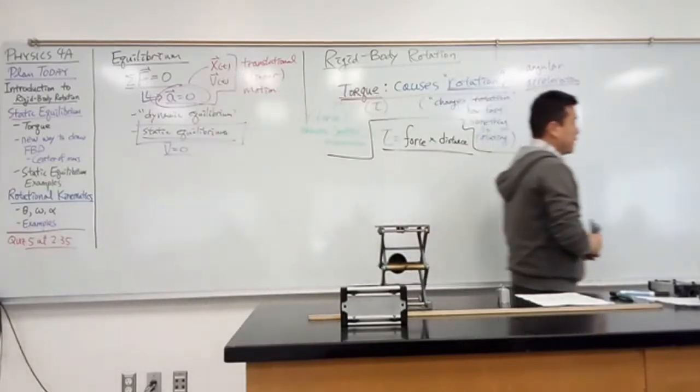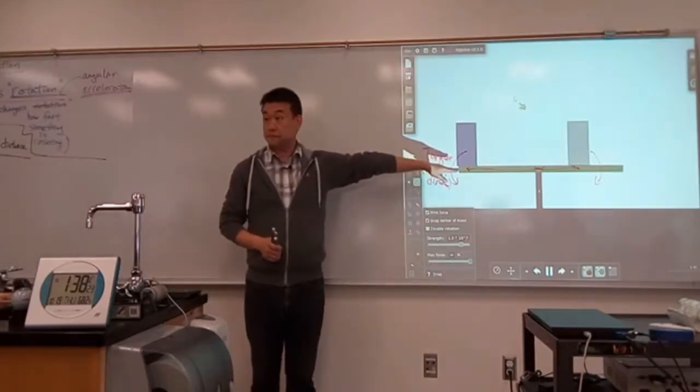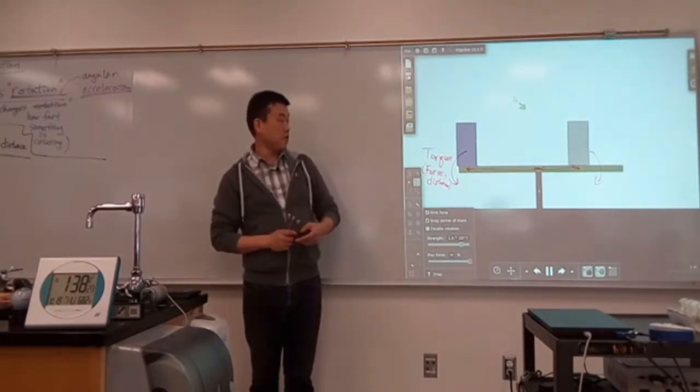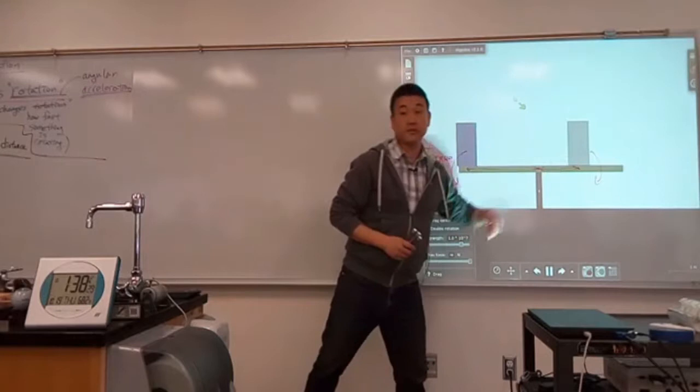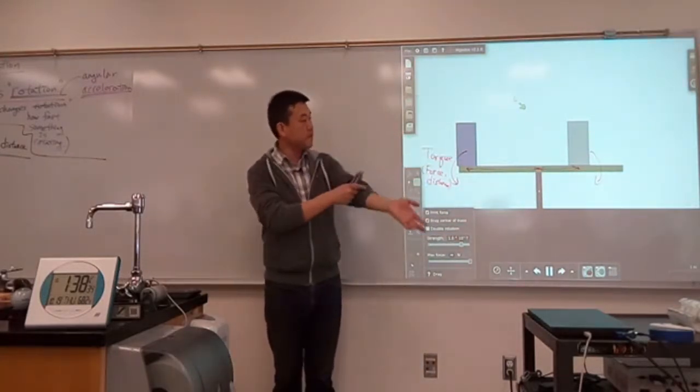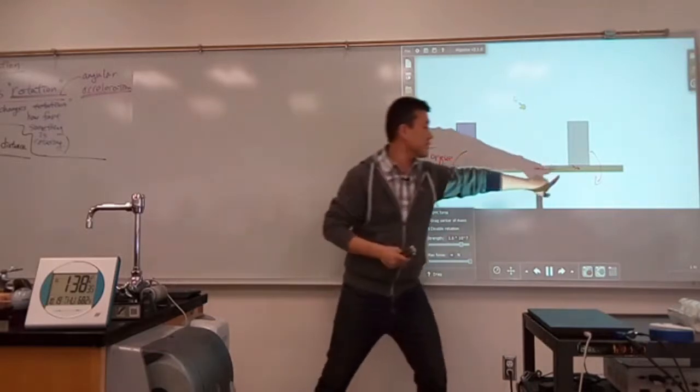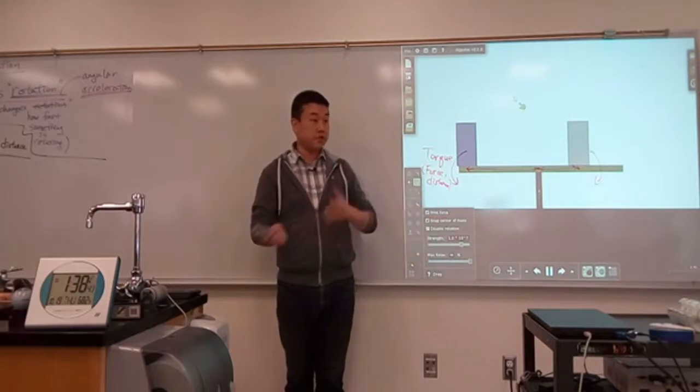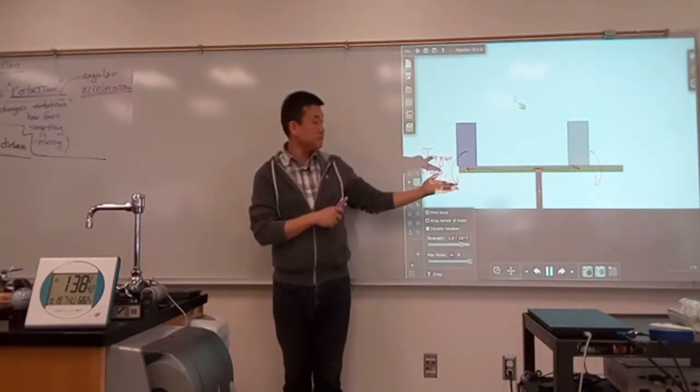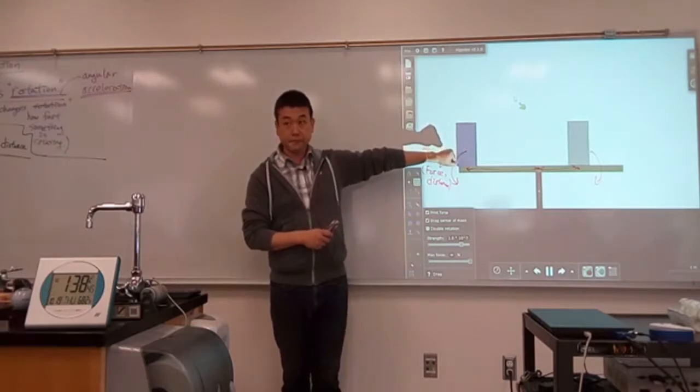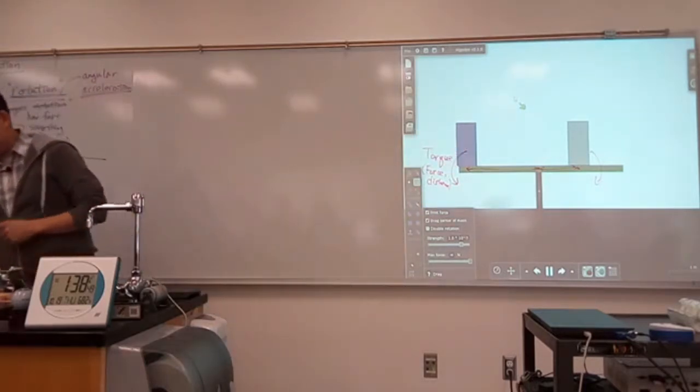But this formula seems reasonable, that torque is force times distance. That kind of explains this, right? So the force of this heavier child is greater. But because his distance is less, he's not able to rotate as much, so they balance out.